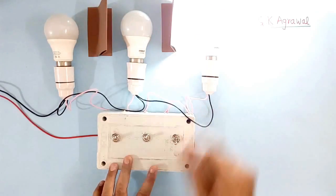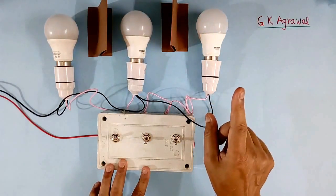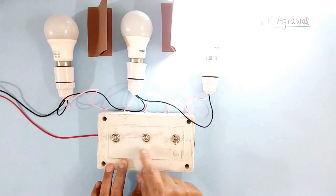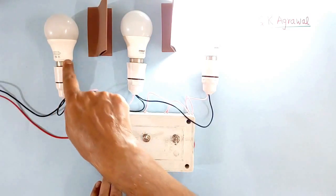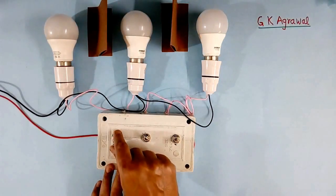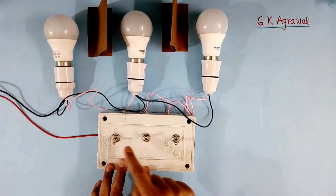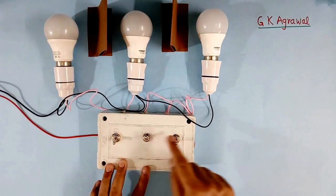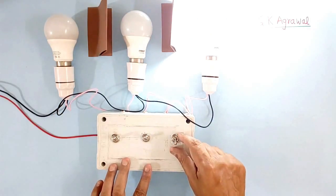Now suppose this is on, I try to switch on this, this will not become on, this also will become off. Similarly, if I try to switch on this, this will not become on, this bulb also will become off. If we keep two on, no bulb will be on. At a time only one switch will be on.